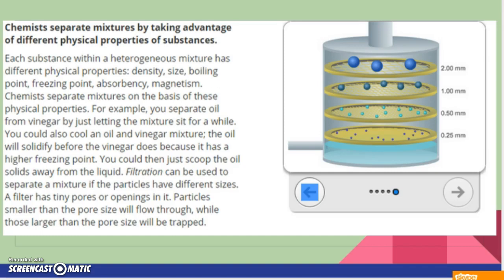Filtration can be used to separate a mixture if the particles have different sizes. A filter has tiny pores or openings. Particles smaller than the pore size will flow through while those larger will be trapped. So this is an example of a pretty complex filter.